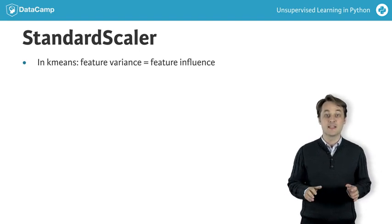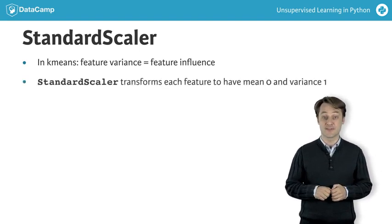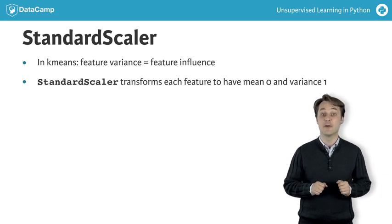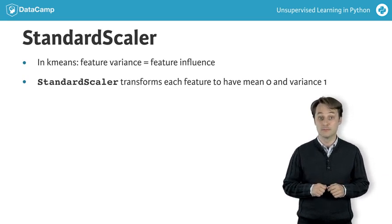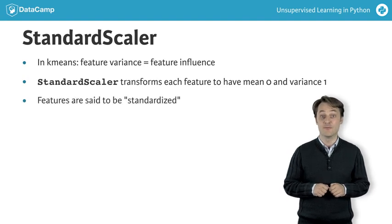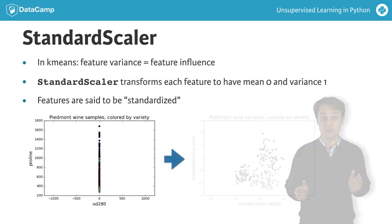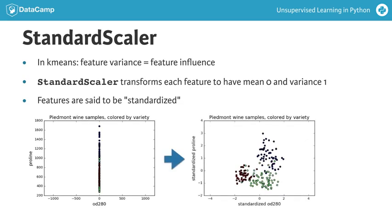This can be achieved with the StandardScaler from scikit-learn. It transforms every feature to have mean 0 and variance 1. The resulting standardized features can be very informative — using standardized OD280 and proline, for example, the three wine varieties are much more distinct.